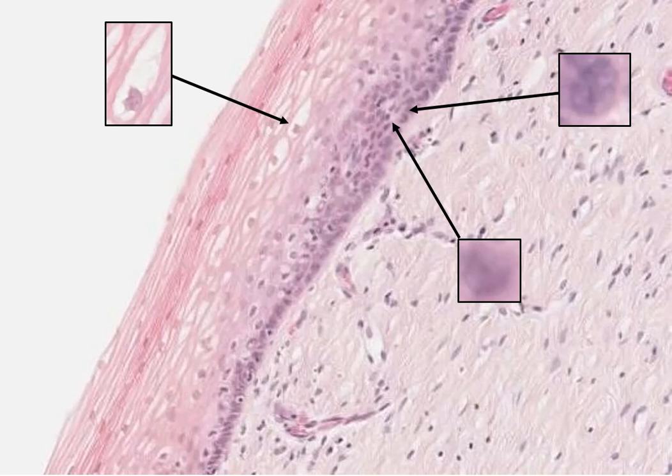The outermost layer is the superficial layer. These cells are flat, eosinophilic, and polygonal in shape. The superficial layer can vary in thickness based on the amount of estrogen stimulation.